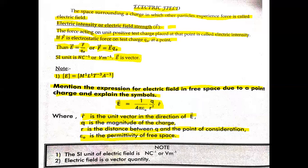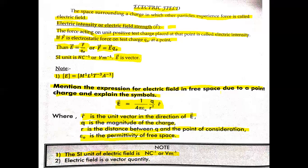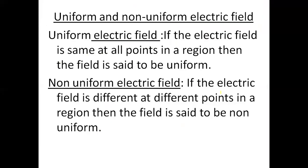The SI unit of electric field is Newton per Coulomb, or equivalently volt per meter. Electric field is a vector quantity — obviously, because it has both magnitude and also direction.